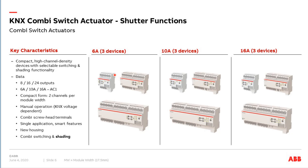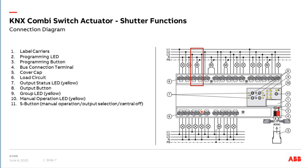We talk about the KNX CombiSwitch Actuators — in total nine devices: three with 6 ampere, three with 10 ampere, and three with 16 ampere. The rest — manual operation, connection terminals, housing — is largely the same. We have from 8 over 16 to 24 outputs for switching. For shutter, the number of channels is half of that, because it's a Combi device you can use for switching but also for shutter solutions.